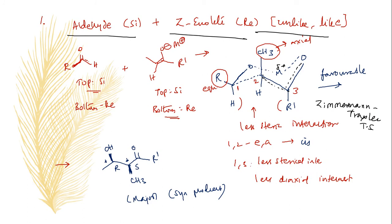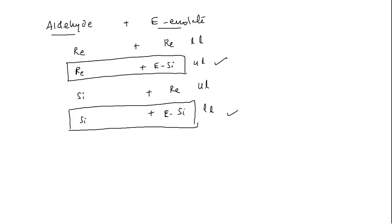So acyl aldehyde and Z-enolate combination always gives syn-major. In this video we are going to discuss about acyl aldehyde and acyl E-enolate combinations in aldol reaction. There are totally four possibilities: the Re-face of acyl aldehyde can interact with the Re-face of enolate, the Re-face of acyl aldehyde can interact with the Si-face of enolate, the Si-face of aldehyde can interact with the Re-face of enolate, and the Si-face of aldehyde can interact with the Si-face of enolate.